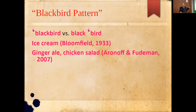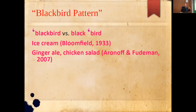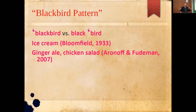Starting from Chomsky and Halle back in 1968, there were two types of stress: Nuclear Stress and Compound Stress. Compounds have stress on the first element, whereas noun phrases have stress on the second element. The notorious 'blackbird' pattern illustrates this: 'black bird' with stress on the first part refers to a specific type of bird, whereas 'black bird' with stress on the second part means any bird that is black. Another notorious example from Leonard Bloomfield in 1933: 'ice cream' versus 'ice cream'.